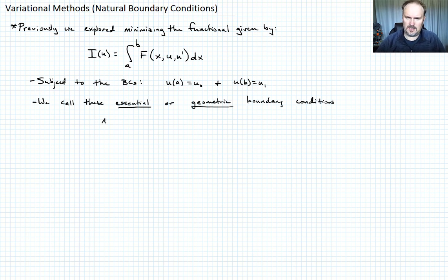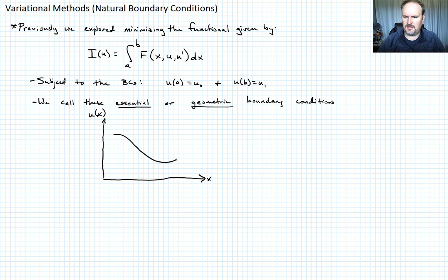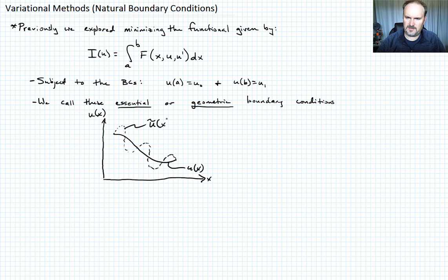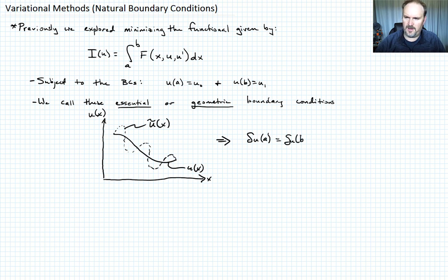If we draw what that looks like and what we require of our varied path: there's x and this is u of x. So if we have some function u of x, and if I have a varied path, it has to meet at those endpoint locations. So this would be our u tilde of x. The implication is that when we have these kinds of boundary conditions, the variation delta u evaluated at a and delta u evaluated at b are equal to zero.